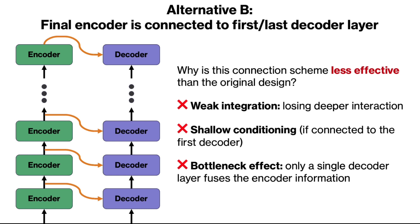The reason why this design is problematic is because it weakens the fusing of information from encoder to decoder. If we connect only to the last decoder layer, we do not get deep interactions between encoder and decoder. Meanwhile, if we connect only to the first decoder layer, the later decoder layers do not have direct access to the context of the source sentence — they only see what has already been processed by their preceding layer. In addition, having a single connection creates a bottleneck effect where the burden of fusing information from source language to target language is done through a single connection. So for these reasons, it's better to have more connections and pass the final output of the encoder to each individual decoder layer.